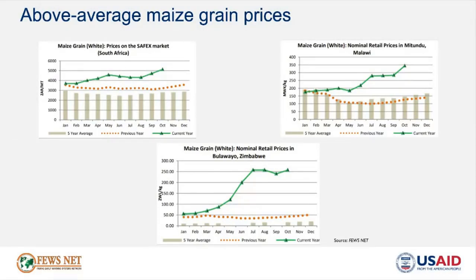Looking at maize prices across the region, current prices are largely above prices last year and the five-year average. White maize prices in South Africa increased by 9% in October to their highest level since 2016, driven by high international prices and increased export demand following Kenya's lifting of a ban on GMO imports. In Malawi, maize prices increased seasonally, driven by poor harvests, depreciation of the local currency, and disruptions to the National Grain Marketing Board. In Zimbabwe, maize grain prices are well above prices last year and increased seasonally as stocks decline, especially in deficit areas. While the lean season has started, the maize supply is generally favorable across the region, although there are sub-national and national market shortages, notably in conflict-affected areas of DRC and Mozambique and drought-affected areas of southern Madagascar, Mozambique, and Zimbabwe.